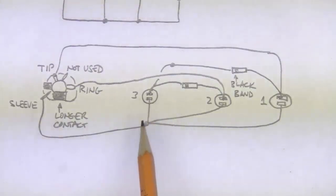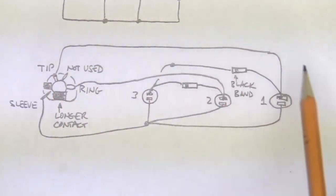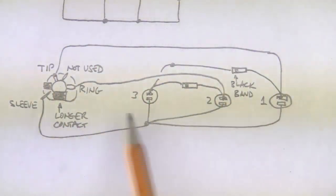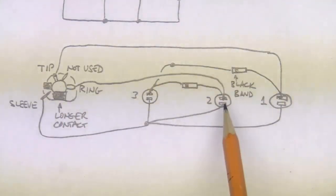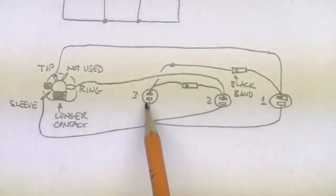So the sleeve goes to all three switches: one, two, three. The tip goes directly to switch one. The ring goes directly to switch two. And switch three is connected to both switches one and two through a diode. Here and here.